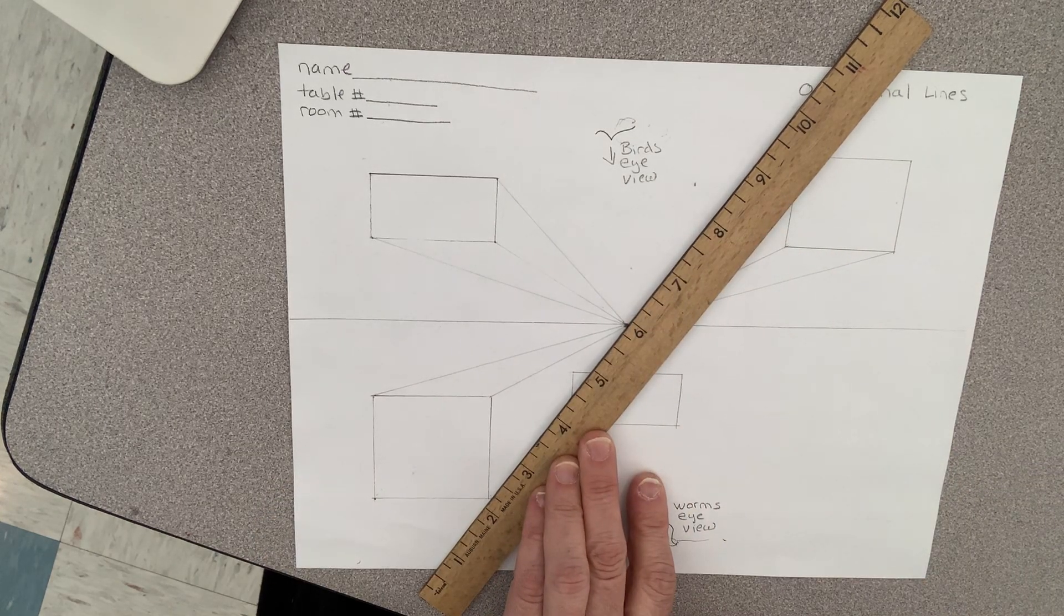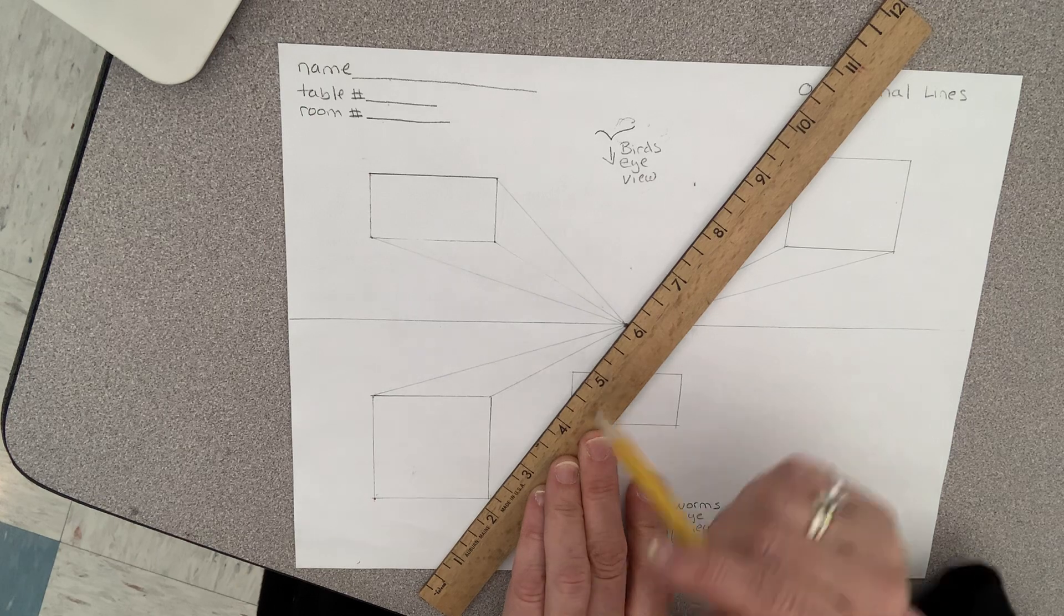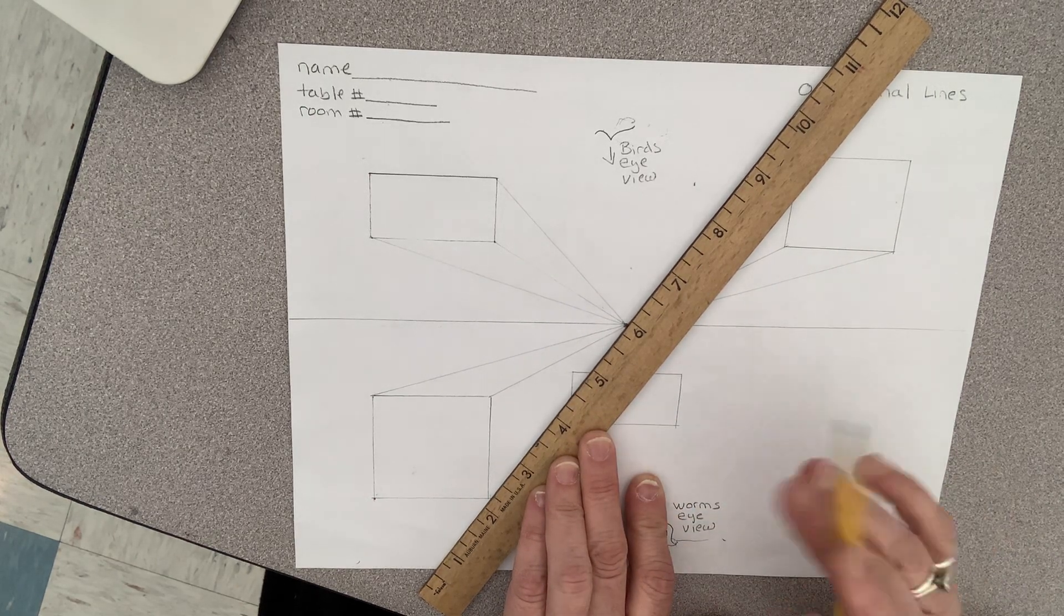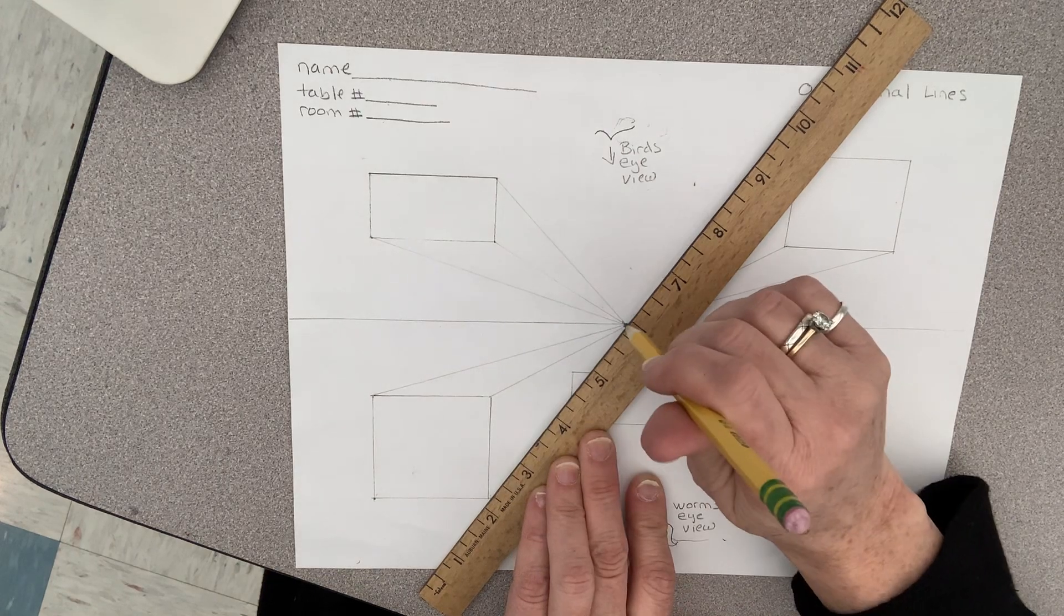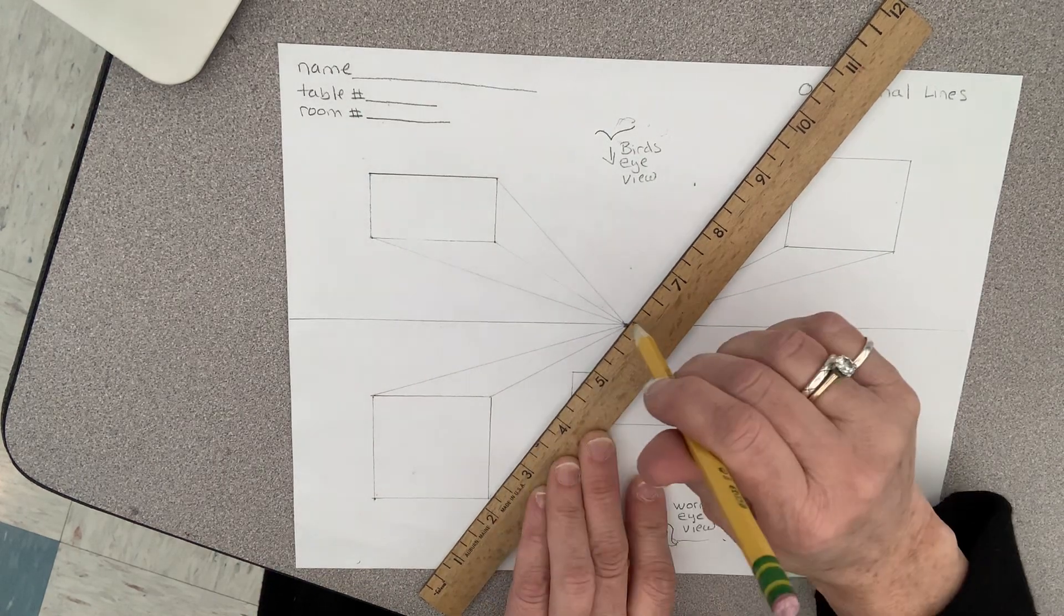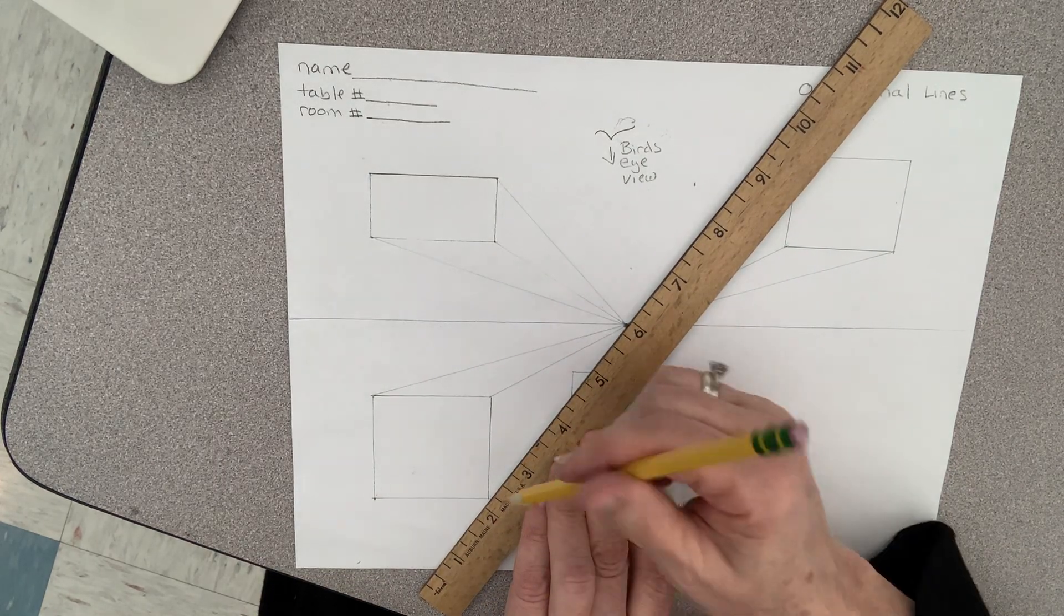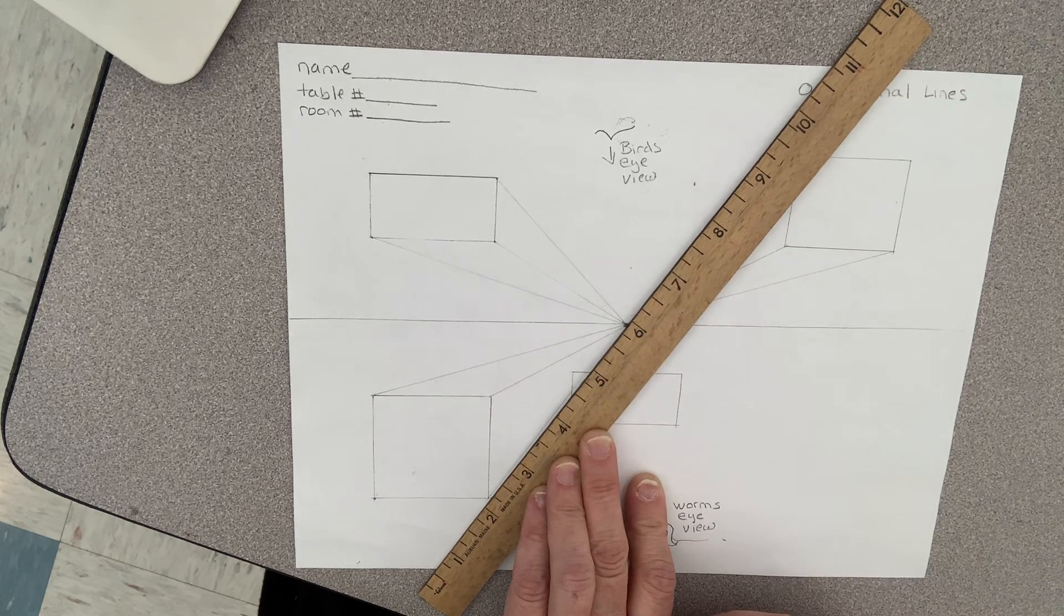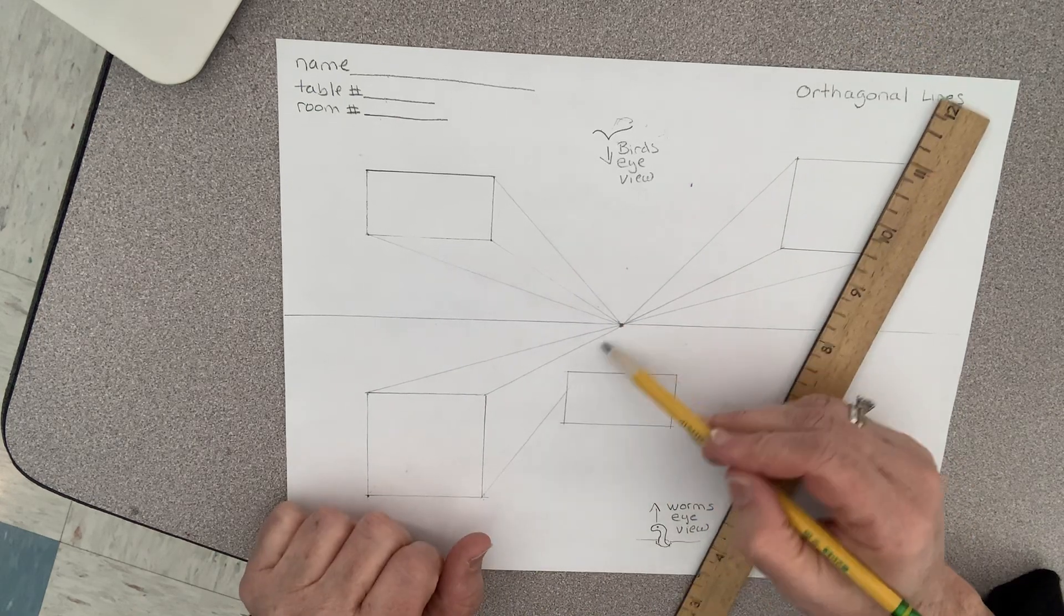Oh, what's happening? Going through this box, huh. So all you have to do is make sure your ruler's lined up properly, and then only draw until you get to the edge of that box. You're not going to draw any further.